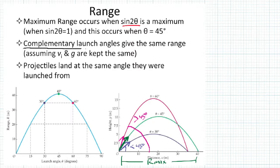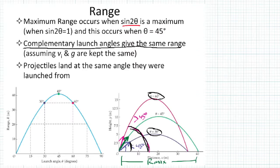One thing to point out: complementary launch angles give you the same range — again assuming the projectile lands at the same level. Complementary means the angles add up to 90 degrees. So 30 degrees and 60 degrees are complementary. The 30-degree shot goes up at a weak angle and the 60-degree shot goes up steeply.